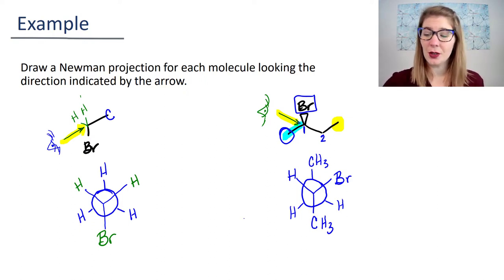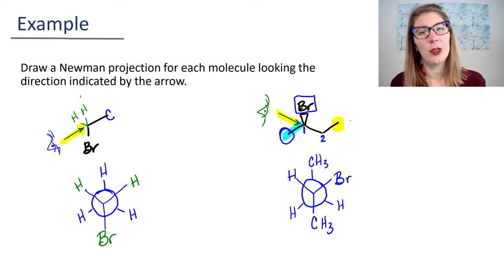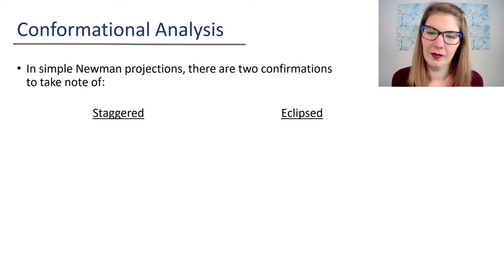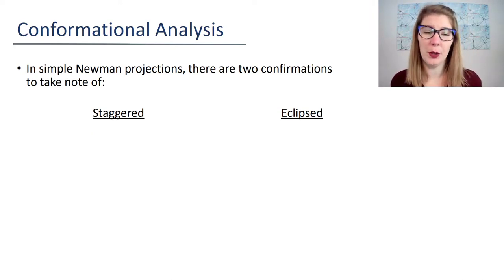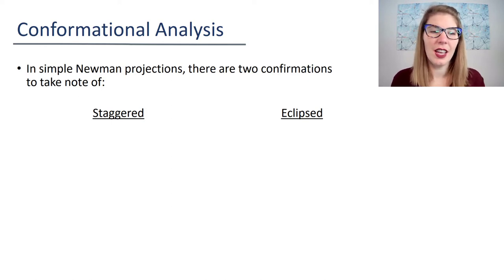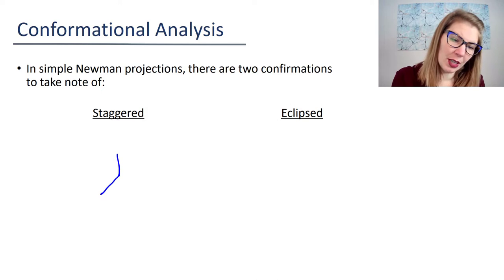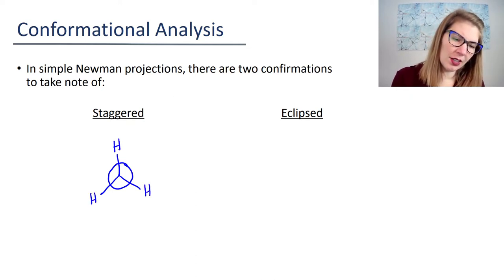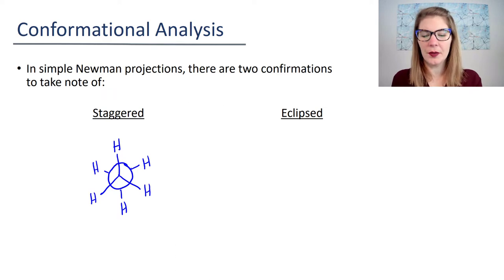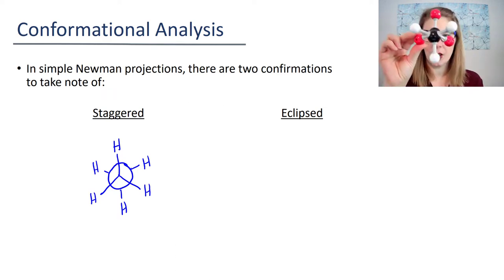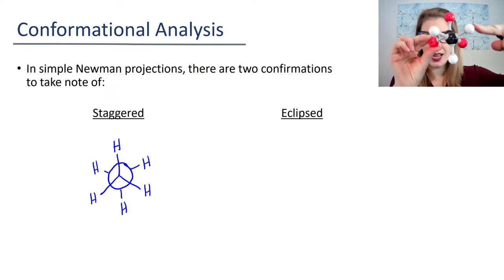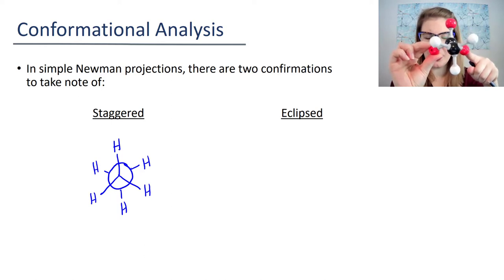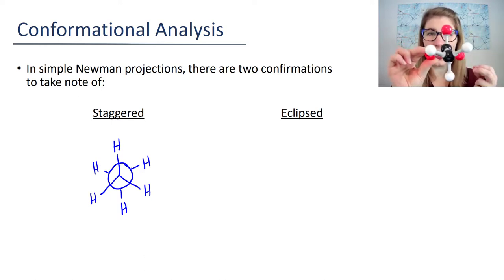Now, what I would like to do is look in more detail at some of these Newman projections and put some terminology behind them. In very simple Newman projections, there are two kinds of conformations. There is what we call the staggered conformation. In the staggered conformation, the bonds to your front carbon are staggered with respect to the bonds in your back carbon. If we look at our model, the white atoms are on the front and the red atoms are on the back carbon, and the white and red are staggered with respect to one another.